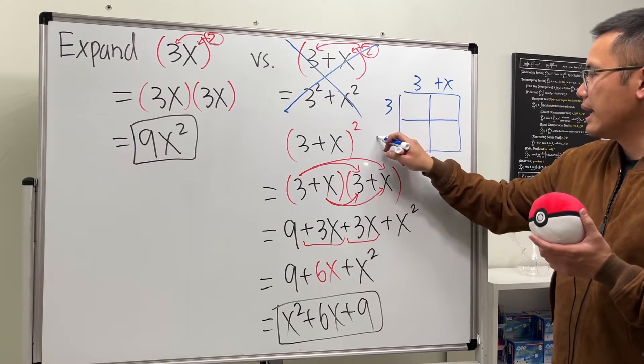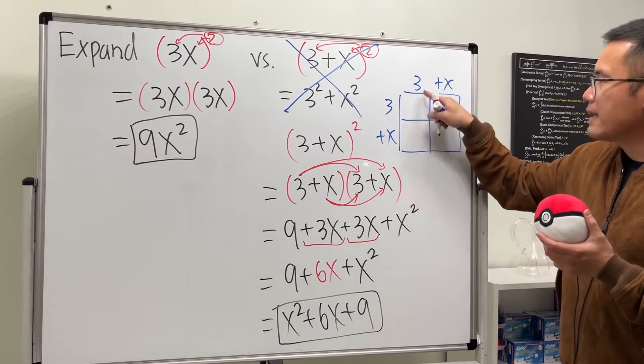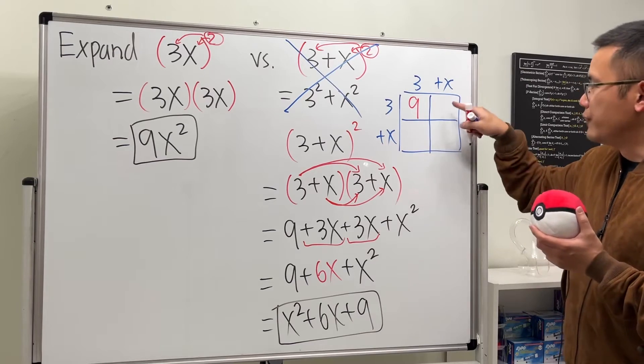And then for the first one, let's put on 3 + x like this, and then for the second one, let's put a 3 + x on the side like this. Ready to fill in this box, we just do 3 times 3, which is 9.